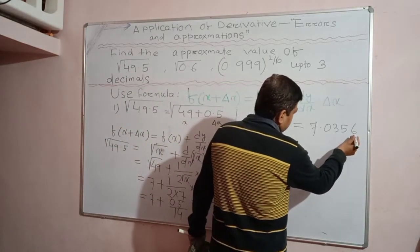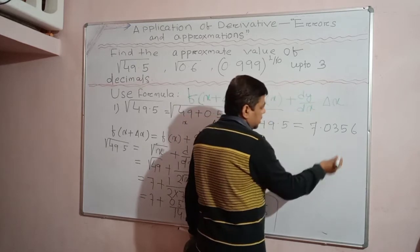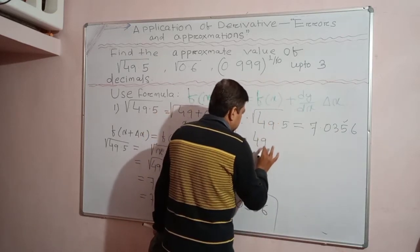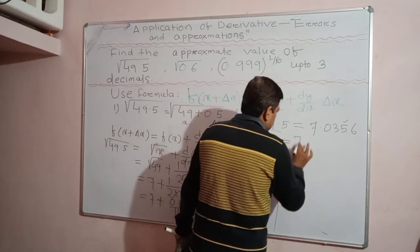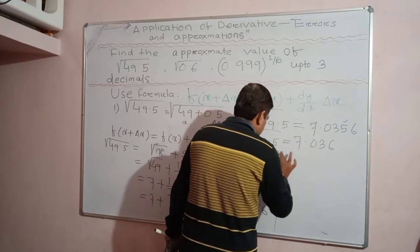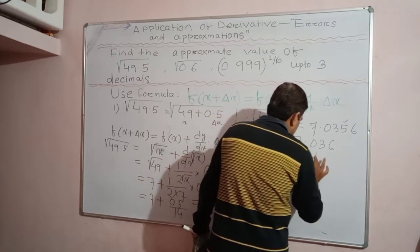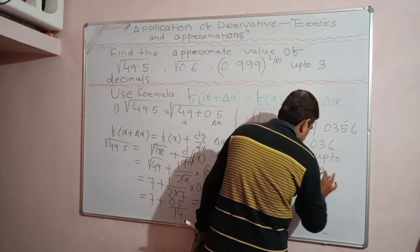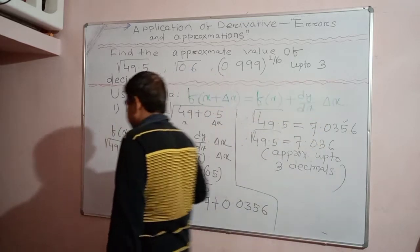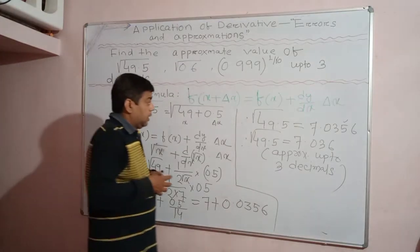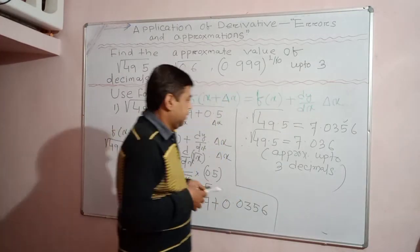We need the value up to 3 decimal places. Looking at the 4th decimal place — it is 6 — so we round up: 5 + 1 = 6. Hence, √49.5 ≈ 7.036 to 3 decimal places. This is how you find the square root of 49.5 using the derivative approximation formula.